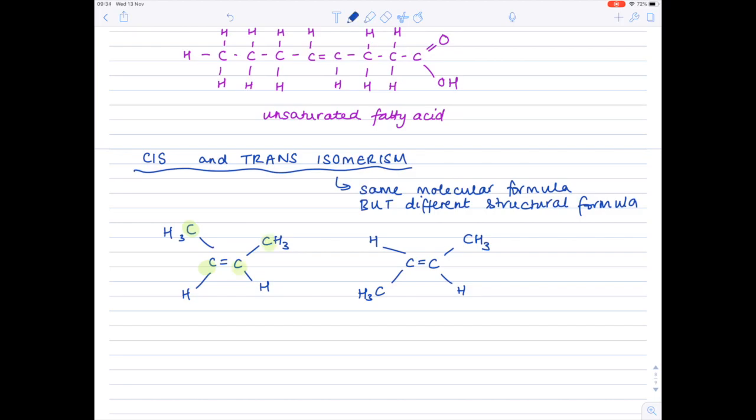Now here I've drawn two isomers. Their molecular formula, we can count it up. One, two, three, four. So that's C4. Let's count up the H's now. Three, four, five, six, seven, eight. So that's C4H8.